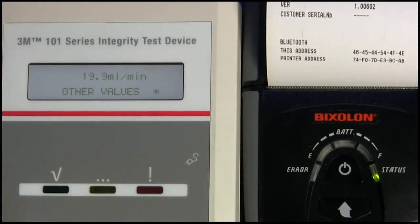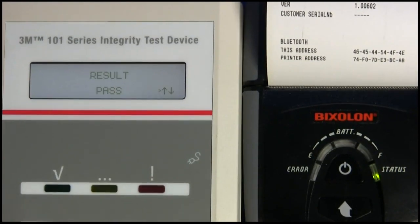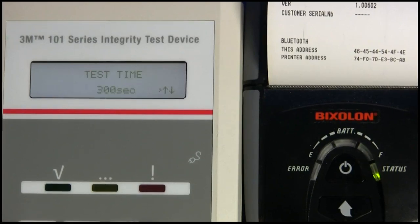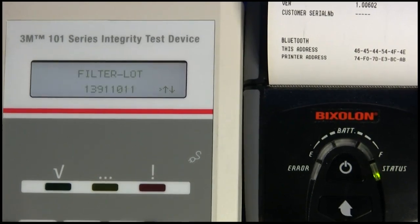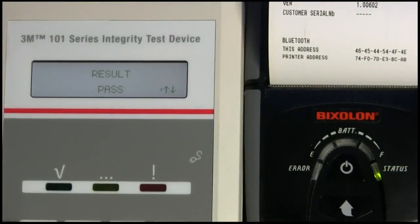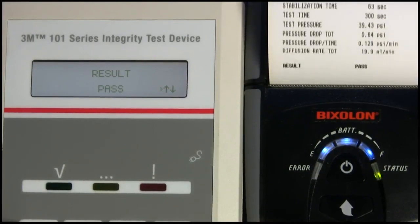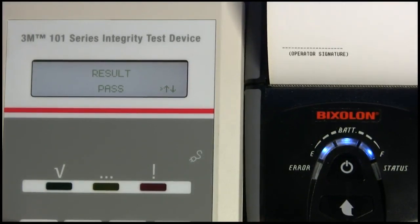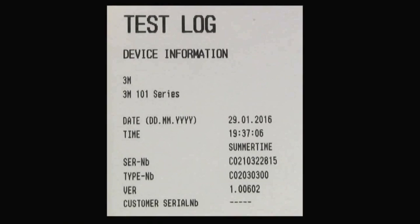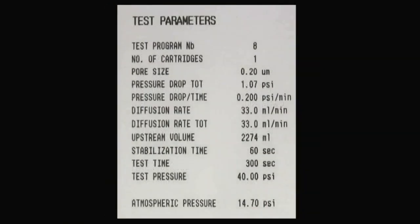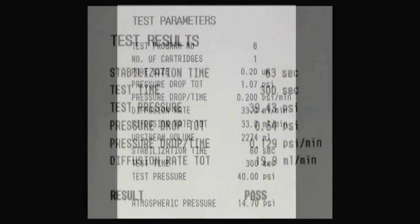Press the up arrow to return to the pass-fail status of the test. One can continue scrolling through key test parameters and results by pressing the up arrow. Alternatively, at any point when scrolling, Start can be pressed to print a hard copy of the test parameters and results. The hard copy is sectioned into several groupings, including device information, operator information, test parameters, and test results.